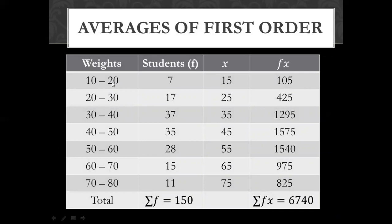10 plus 20 divided by 2, that is 15. Then, 20 plus 30 divided by 2, that is 25. 30 plus 40 divided by 2, that is 35. So, the next...